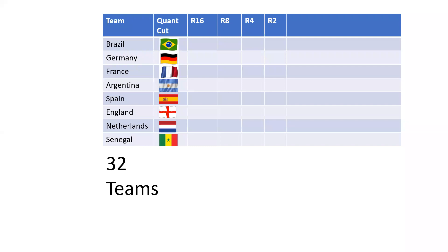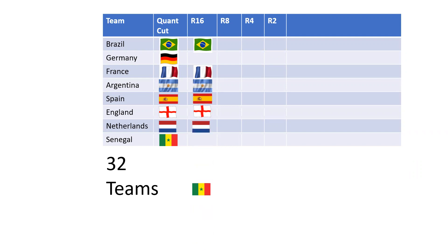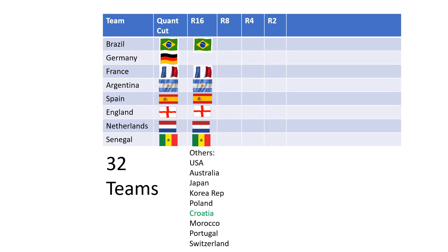And then out of the group stages into the round of 16, let's see what happened. Brazil went through. The big surprise was Germany got knocked out. France went through, Argentina, Spain, England, Netherlands, and our outside bet Senegal all went through. So it was a pretty good selection from the initial cut. The other teams that made the round of 16 are down here — Croatia was the finalist last time round, losing out to France, so they're the most notable team in the others' list.